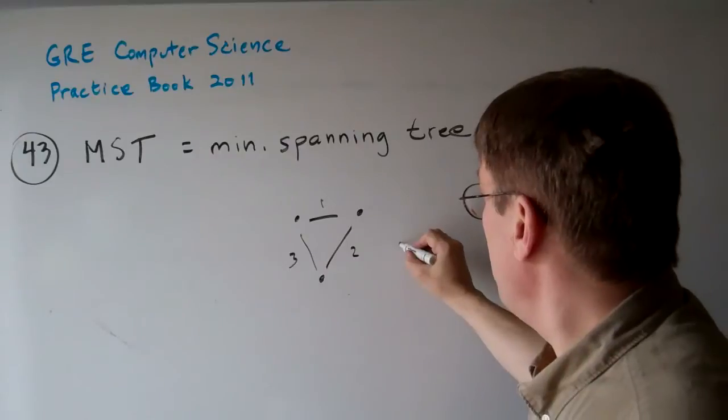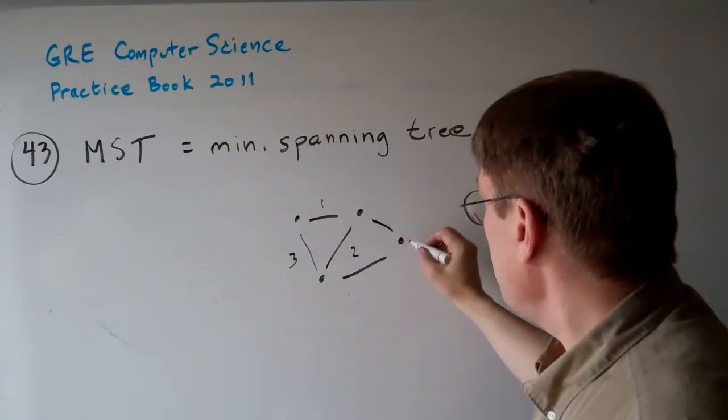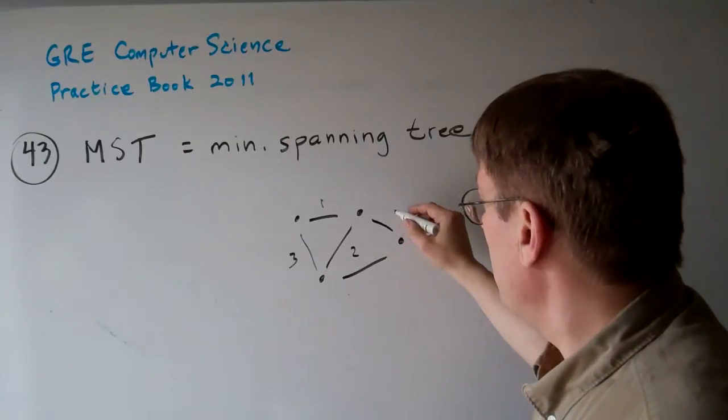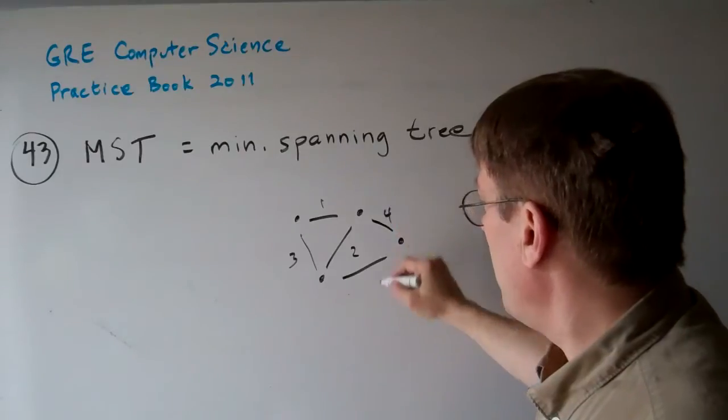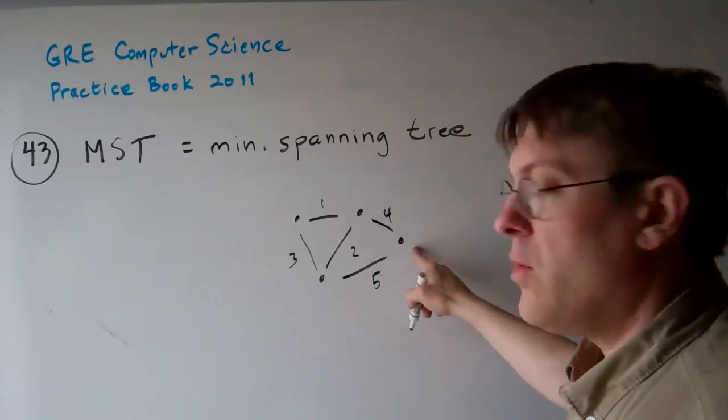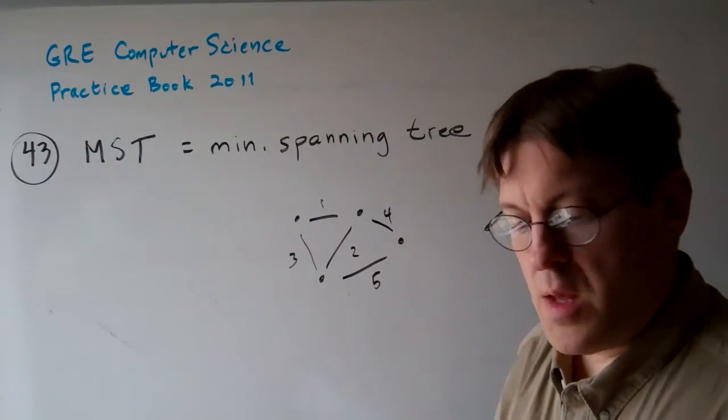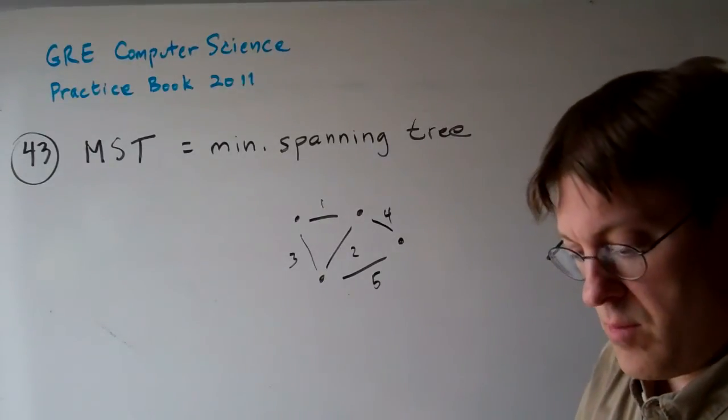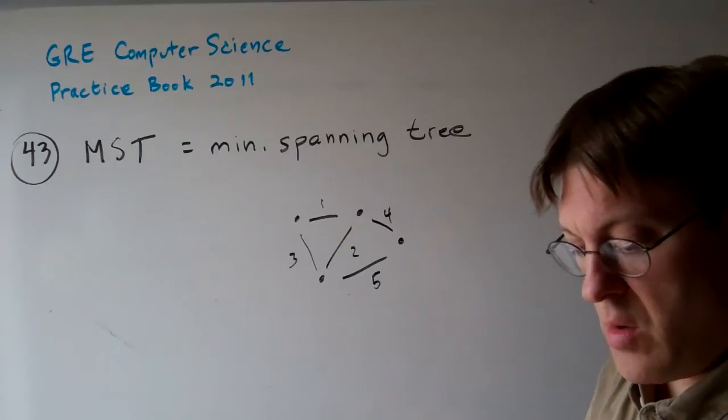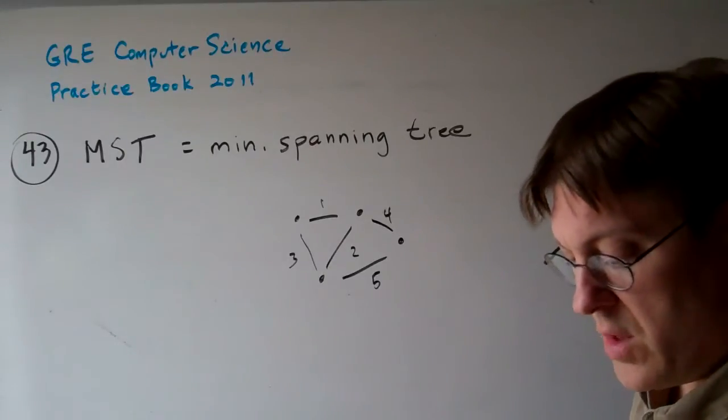If we add another node, let's say this one is four or five, no matter what we add, we're going to have to keep the minimum length edge. So there's no question about that.